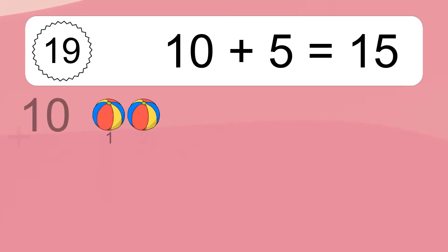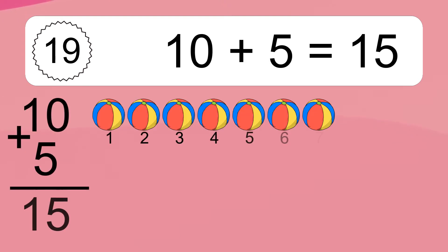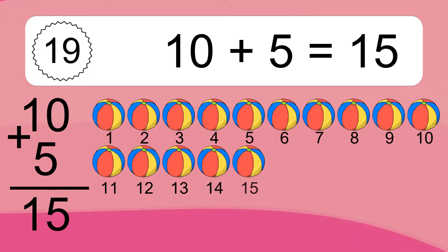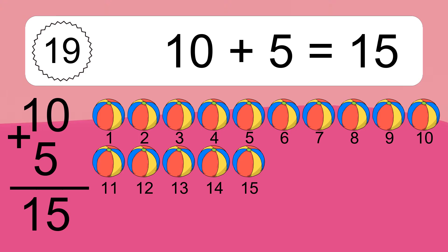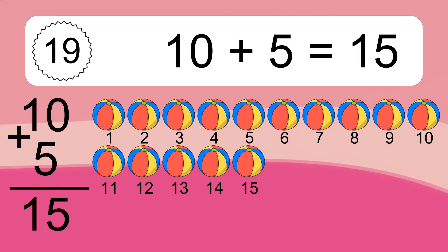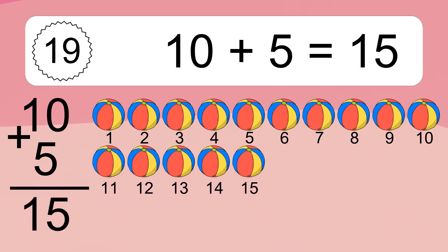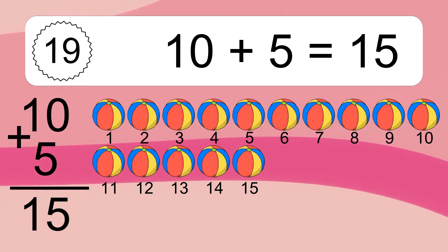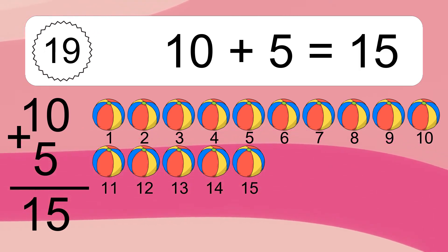10 plus 5 equals what? 3 plus 5 equals 15. Let's count it. 1, 2, 3, 4, 5, 6, 7, 8, 9, 10, 11, 12, 13, 14, 15.